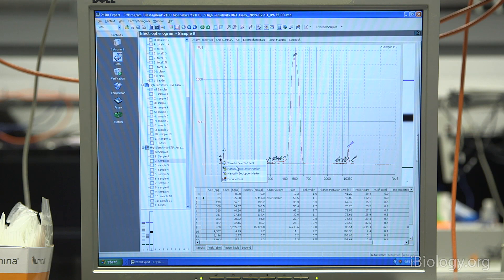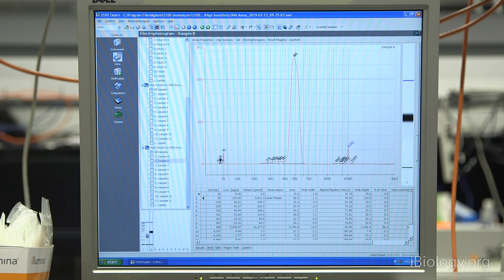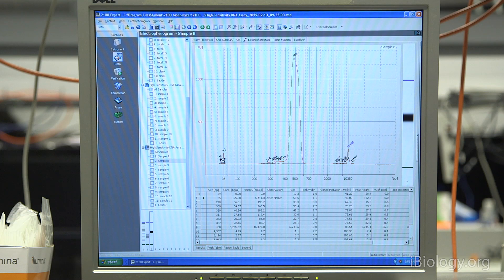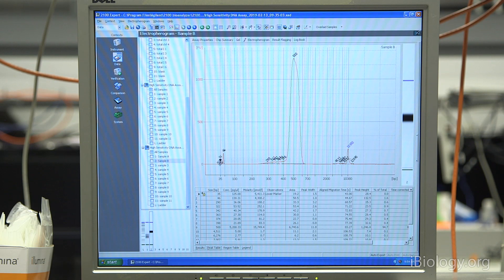For instance, if I wanted to call this 29 base pair peak my 35 base pair standard or internal reference, I can right-click on it and manually set the lower marker. This will recalculate the size of everything. Now you can see that the software has now called this my 35 base pair peak. And it's calling this marker a 46 base pair peak. This isn't what I actually want, so I'll go ahead and change it back and hover over my actual lower marker, see the bullseye, right-click, and set lower marker.